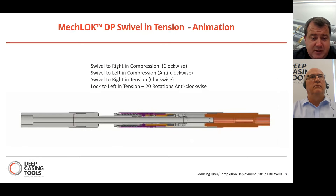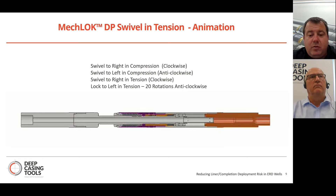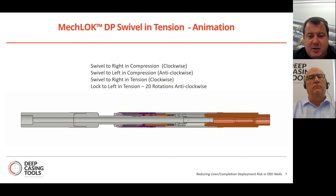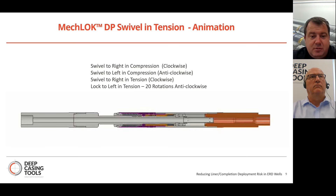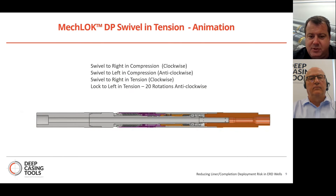The next development — the natural progression — is a tool that, in tension, can rotate to the right; in compression, can swivel; and then 20 turns to the left in tension will lock the tool permanently. So it's essentially: permanent swivel to the right in tension and compression, and lock to the left in tension with 20 turns. There's an animation of the tool stroking through the locking procedure.